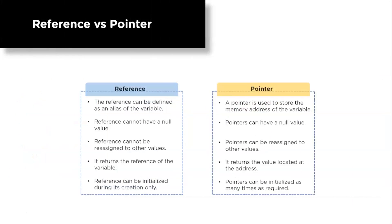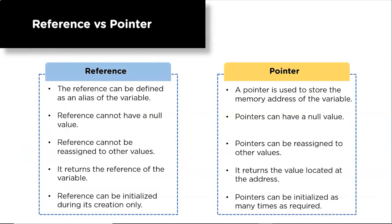Now the difference between reference and pointer. A reference is an alias of the variable — an additional name for it. A pointer stores the memory address of the variable. Reference cannot have a null value, whereas pointers can. References cannot be reassigned to other variables, whereas pointers can be reassigned. A reference can be initialized only during its creation and cannot be re-initialized, whereas a pointer can be initialized as many times as required.